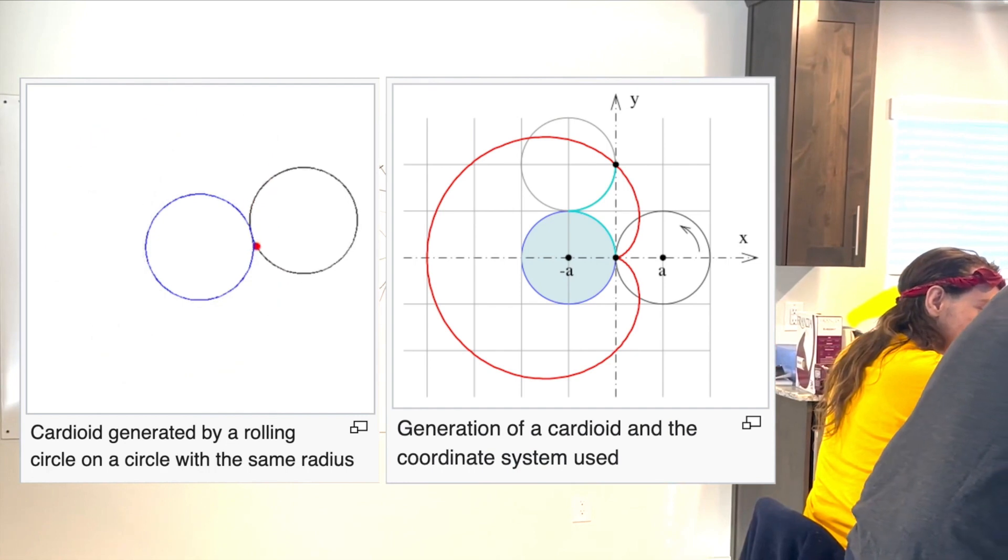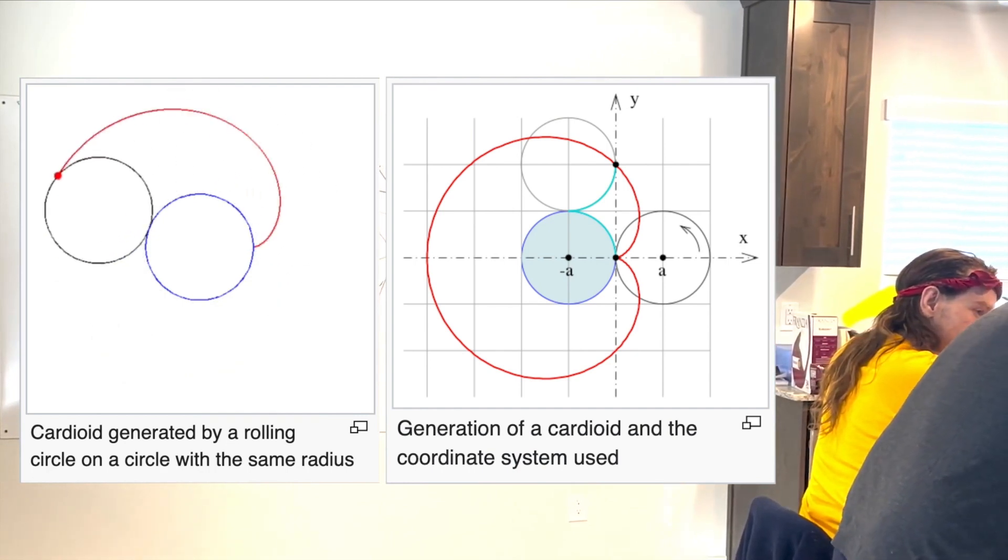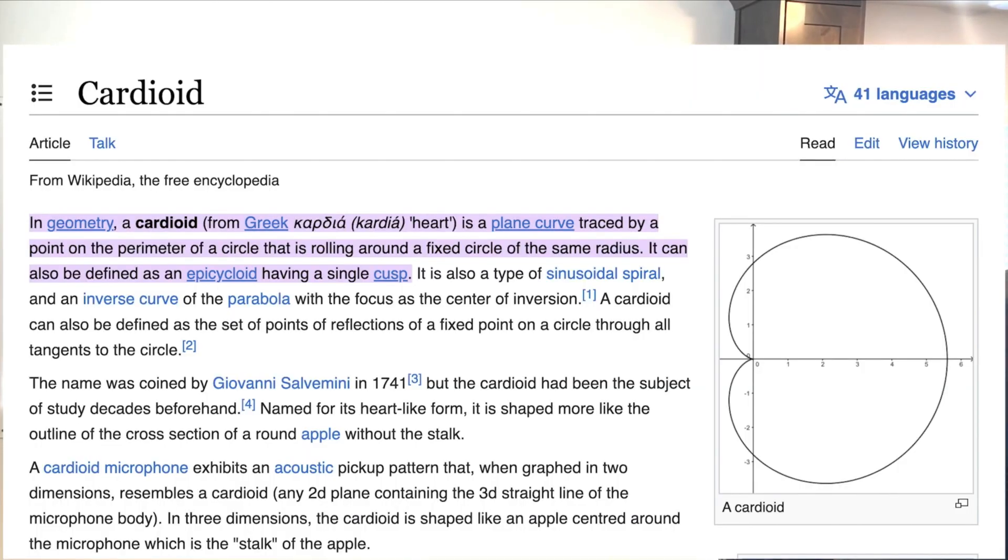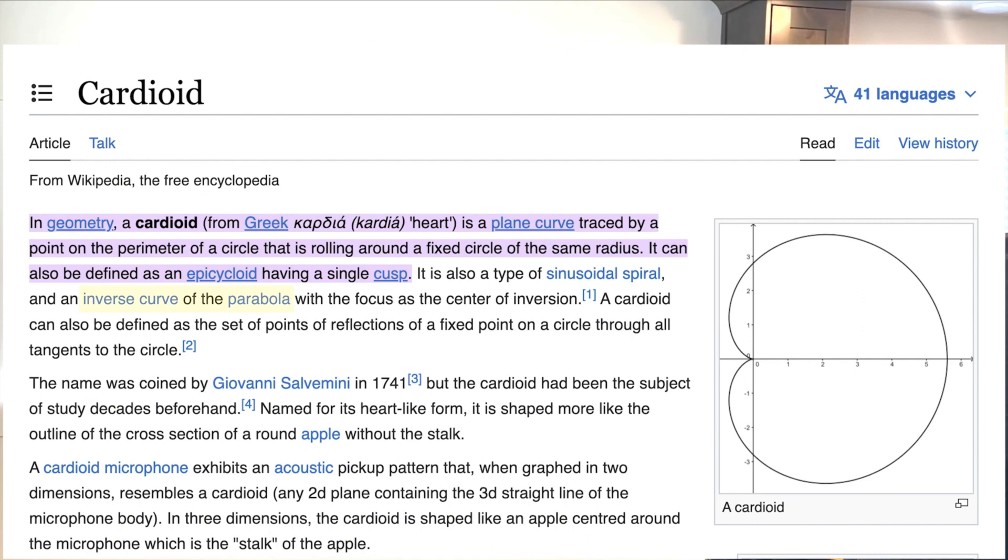But what we want to think of this curve as that path that follows - what kind of path is it? Well, it's the inverse curve of the parabola. It's literally the inverse curve of the parabola with the focus at the center of inversion.